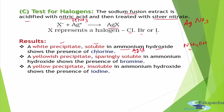If we get a yellowish precipitate, it could be either silver bromide or silver iodide. If it is sparingly soluble in ammonium hydroxide, it is silver bromide, confirming bromine in the organic compound. If it is insoluble in ammonium hydroxide, it is silver iodide, confirming that iodine was present.